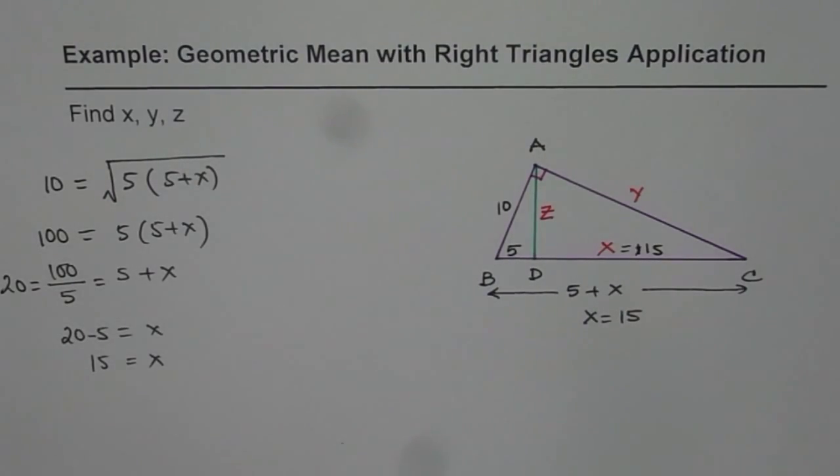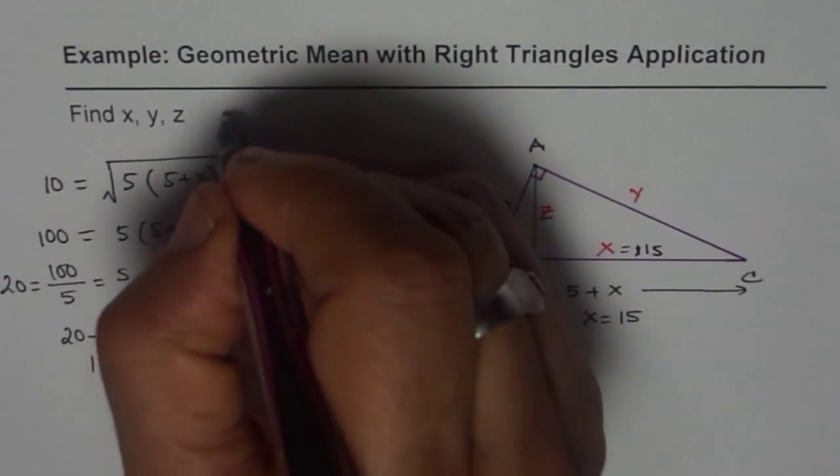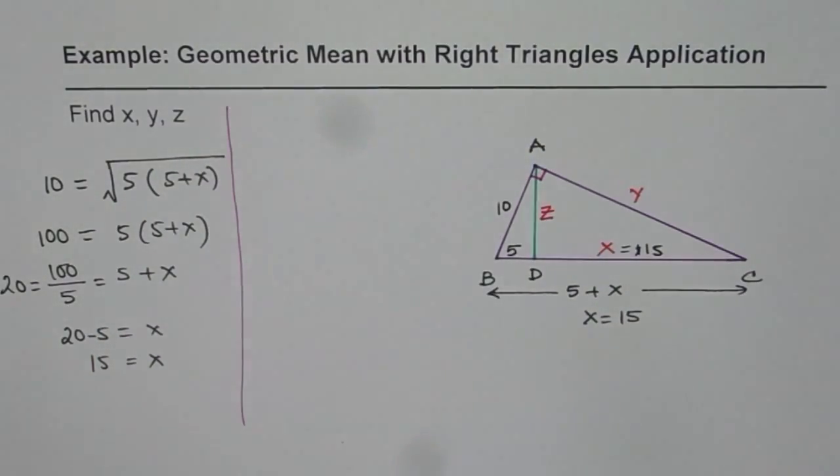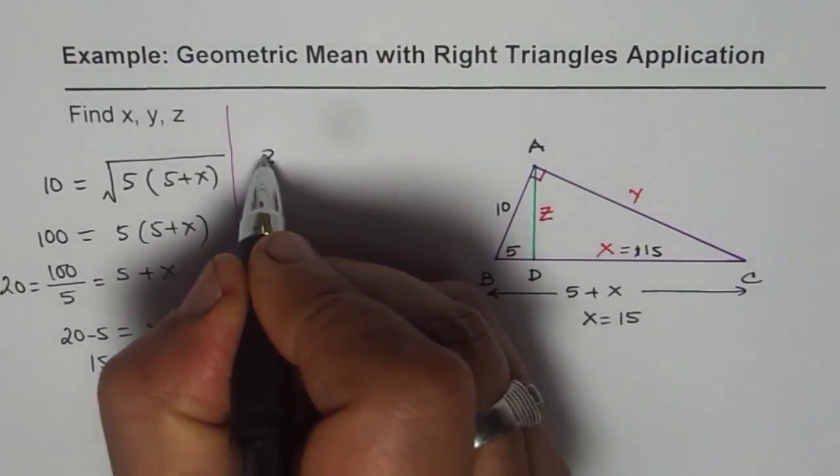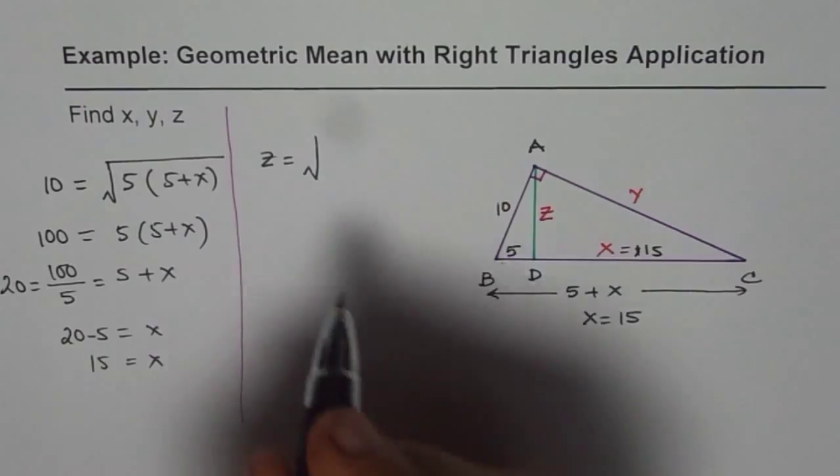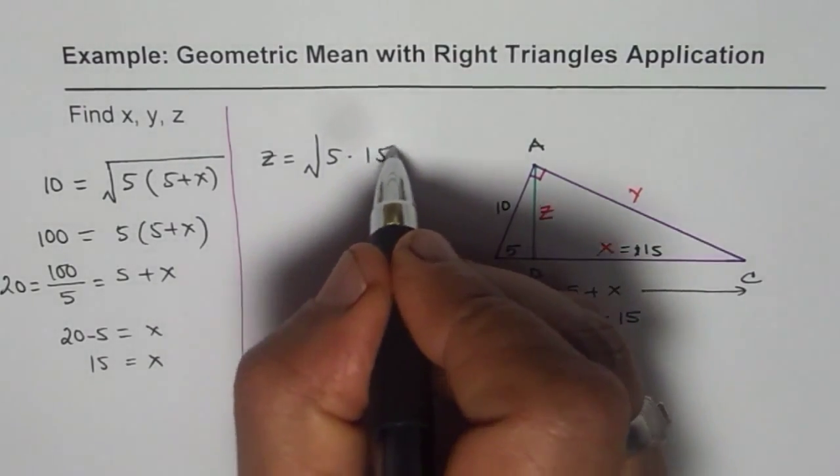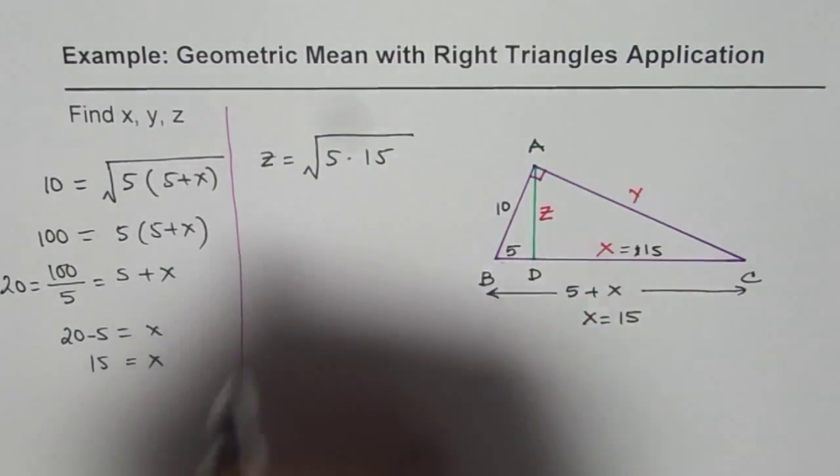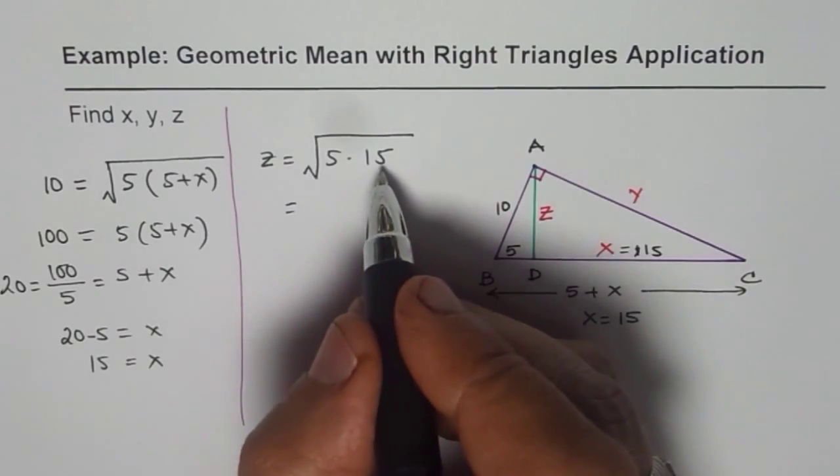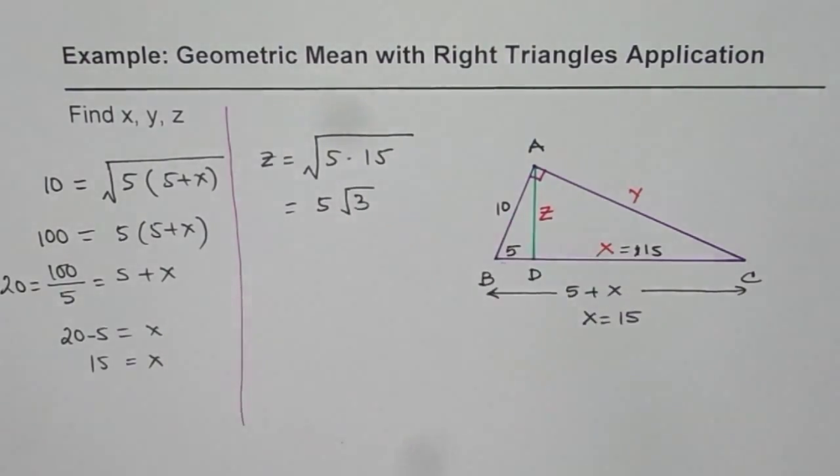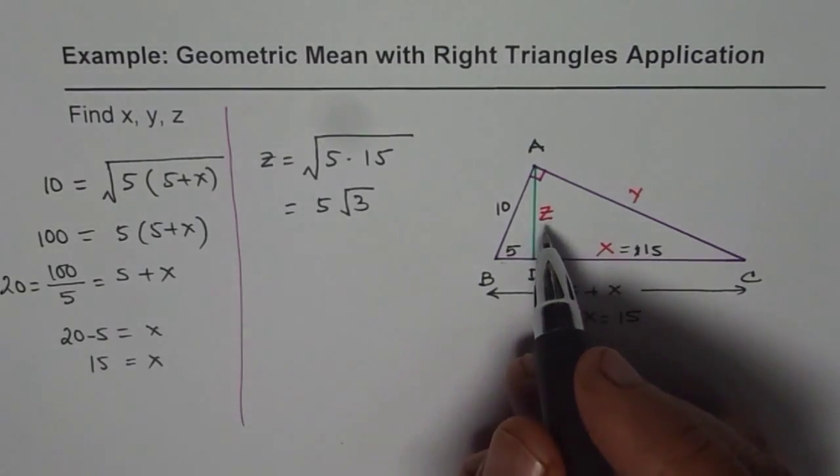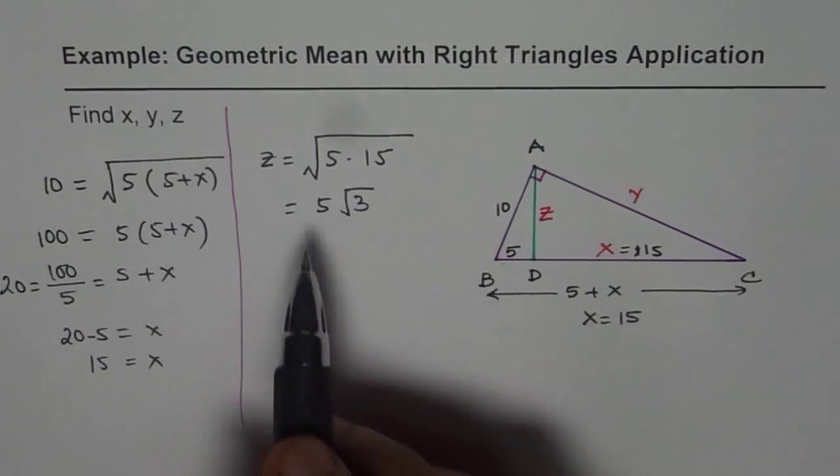Now let's find the altitude which is the geometric mean of these two sides. So z equals square root of 5 times 15. That's the product. So 5 times 15 will be 5 square root of 3. So that's the value of z which is 5 square root of 3.